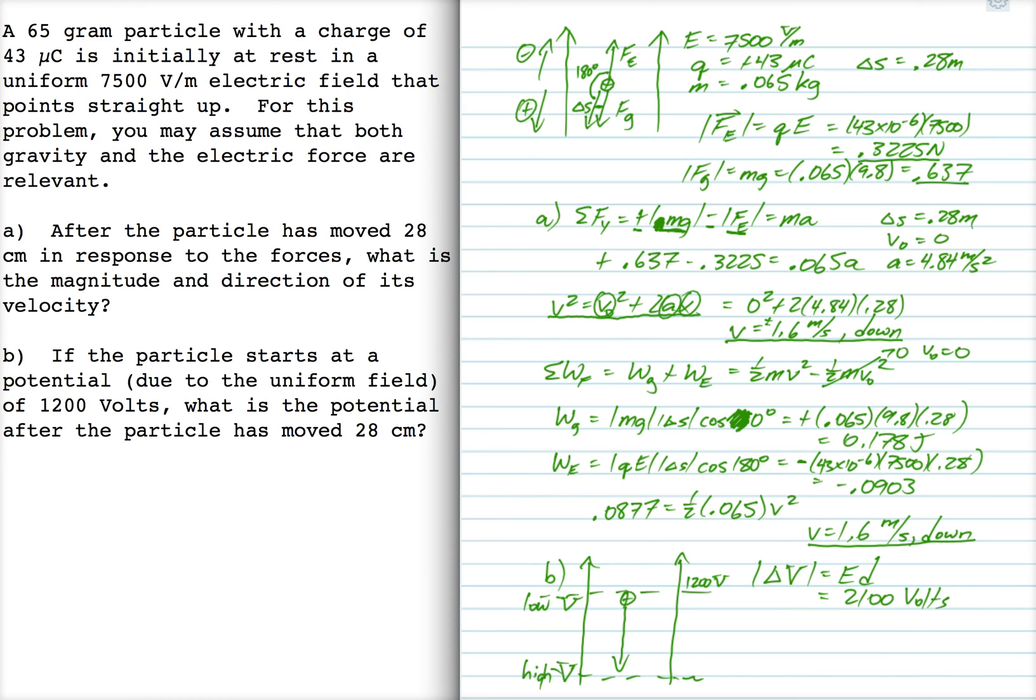In this case, this thing is moving to a higher voltage. So delta V is plus 2100, right? So VF minus 1200 is equal to 2100. And so the final voltage is 3300 volts.